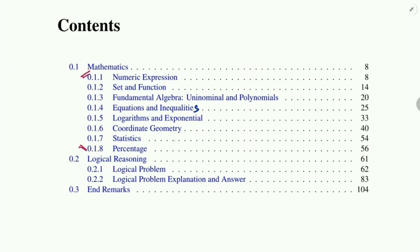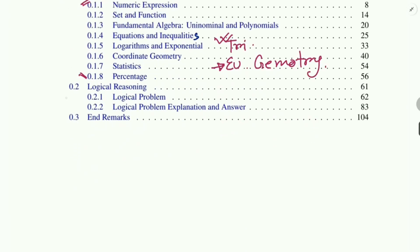The book initially includes eight chapters, from numeric expressions to percentage. I have planned to add two more chapters: trigonometry and Euclidean geometry. Trigonometry is important because a lot of questions come from that chapter, and a couple of questions come from Euclidean geometry as well.